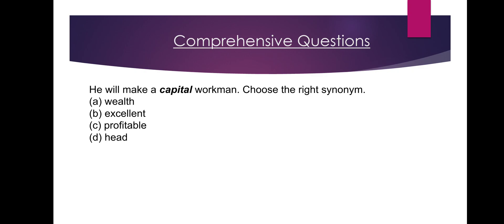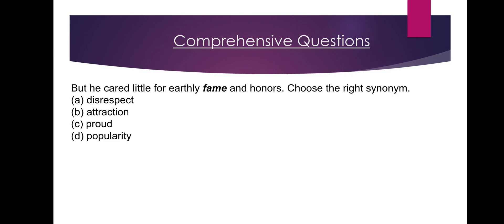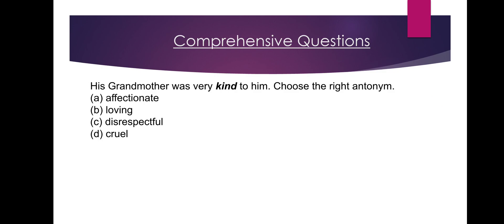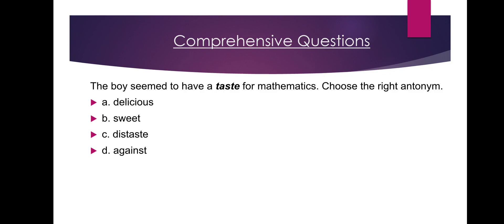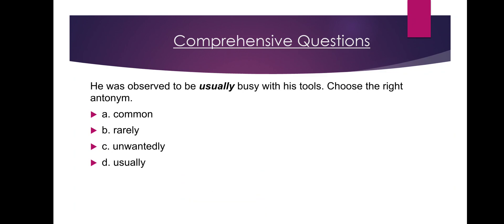Remarkable — synonymous — Notable. Option B. Capital — synonymous — Wealth. Option A. Nobody could tell what the sunshine was composed of. Option A. He cared little for earthly fame and honors. Fame — synonymous — Popularity. Option D. His grandmother was very kind to him — antonym — Kind, Cruel. Option D. The boy seemed to have a taste of mathematics — antonym — Distaste. Option C. Isaac possessed — antonym — Lacks. Option C. He was observed to be usually busy — antonym — Usually, Rarely. Option B.